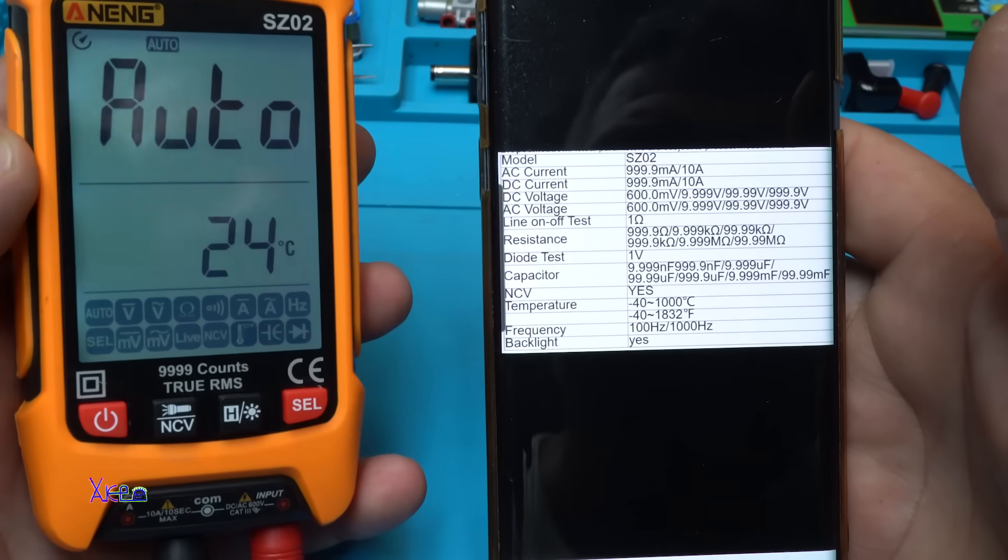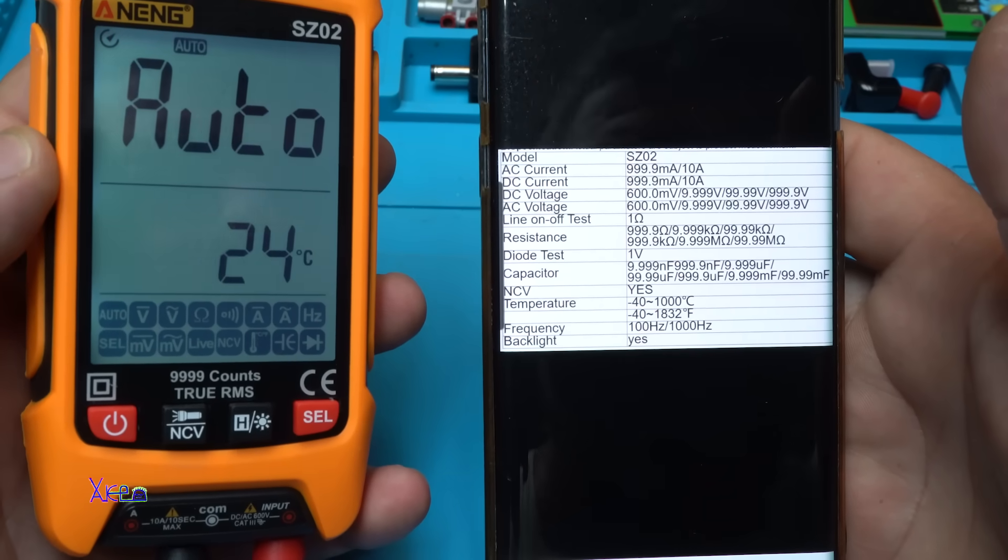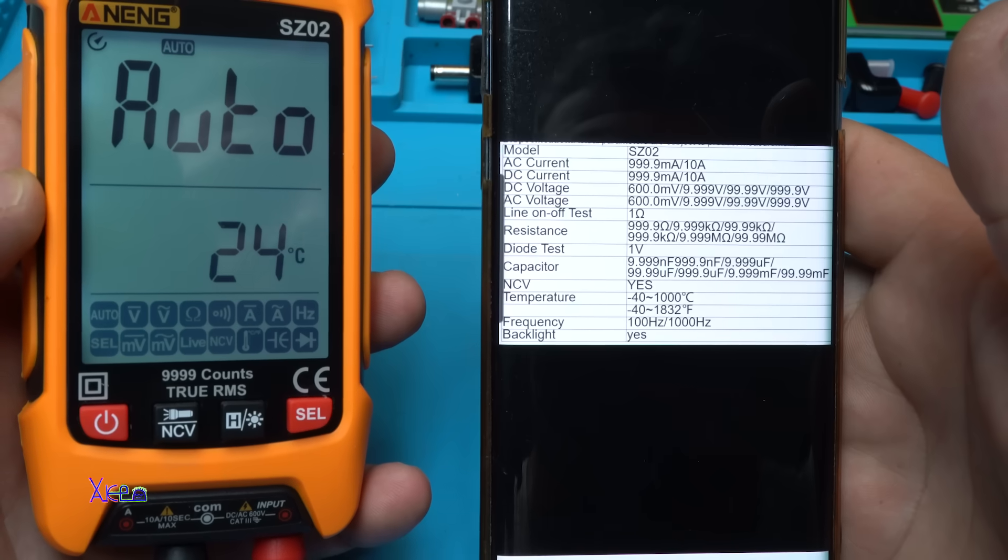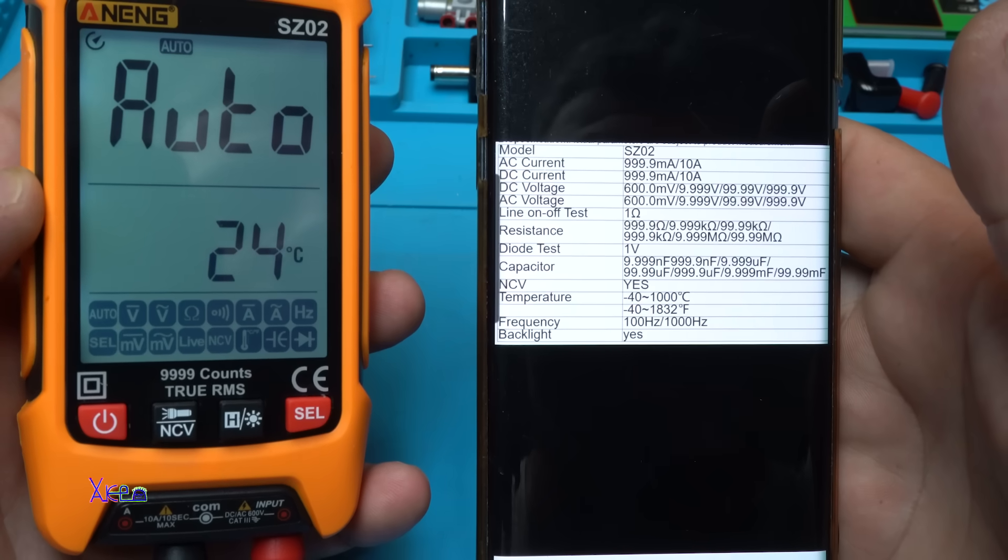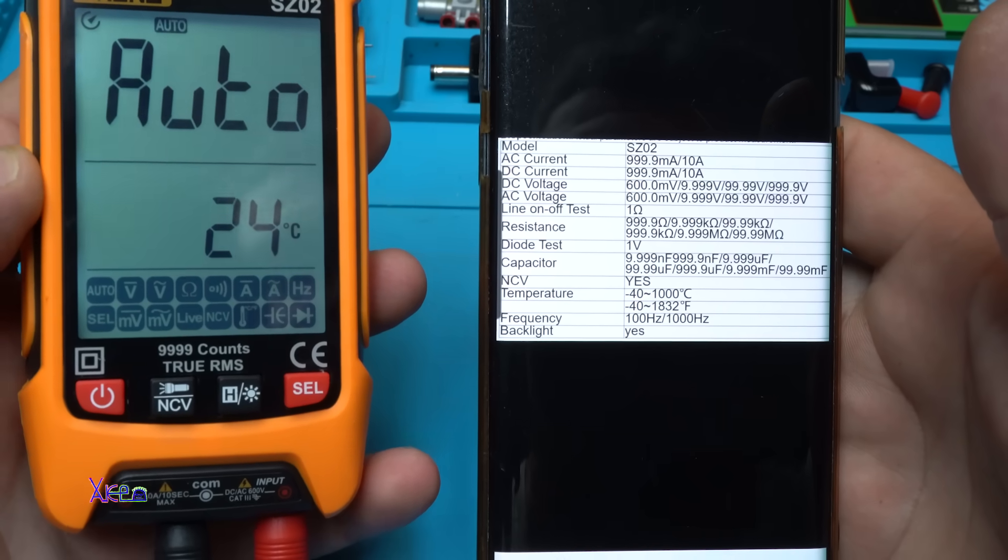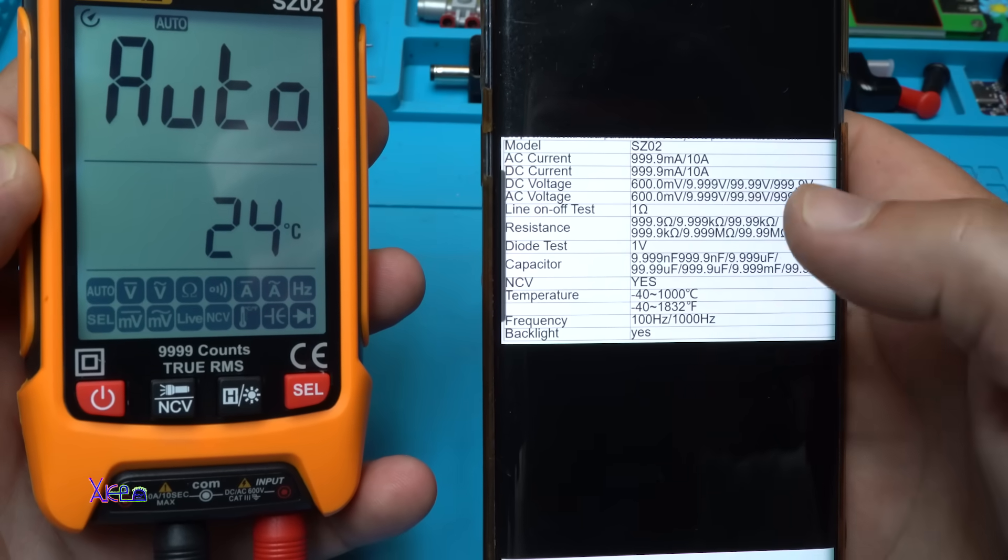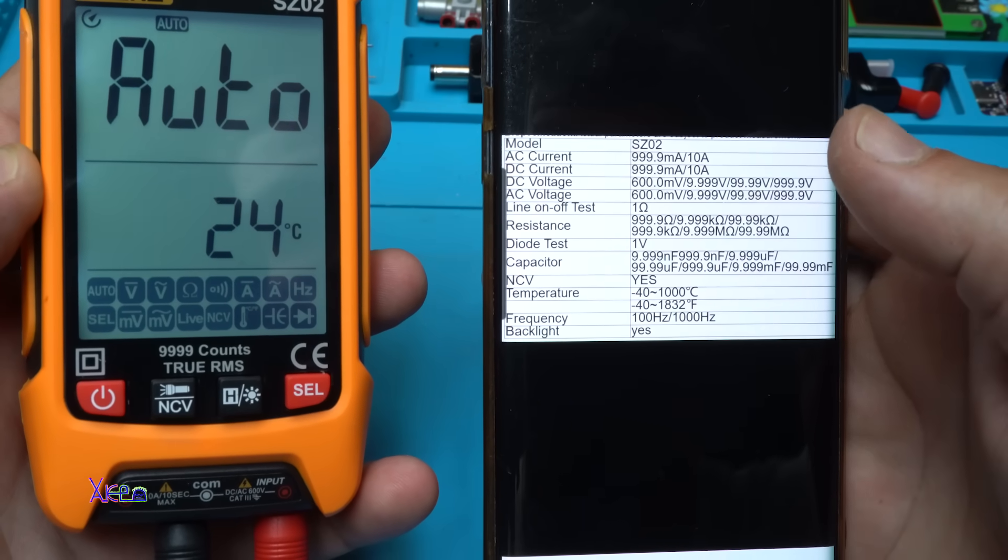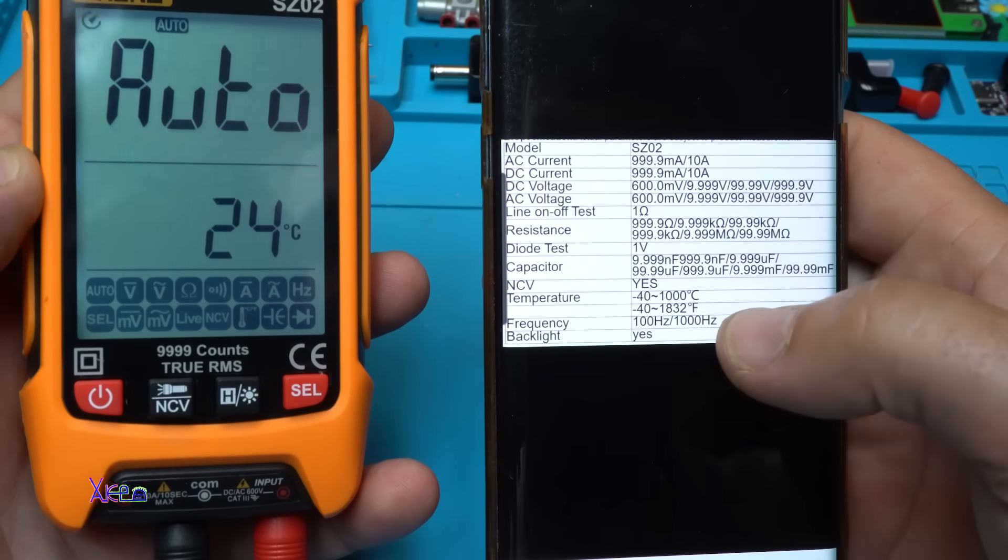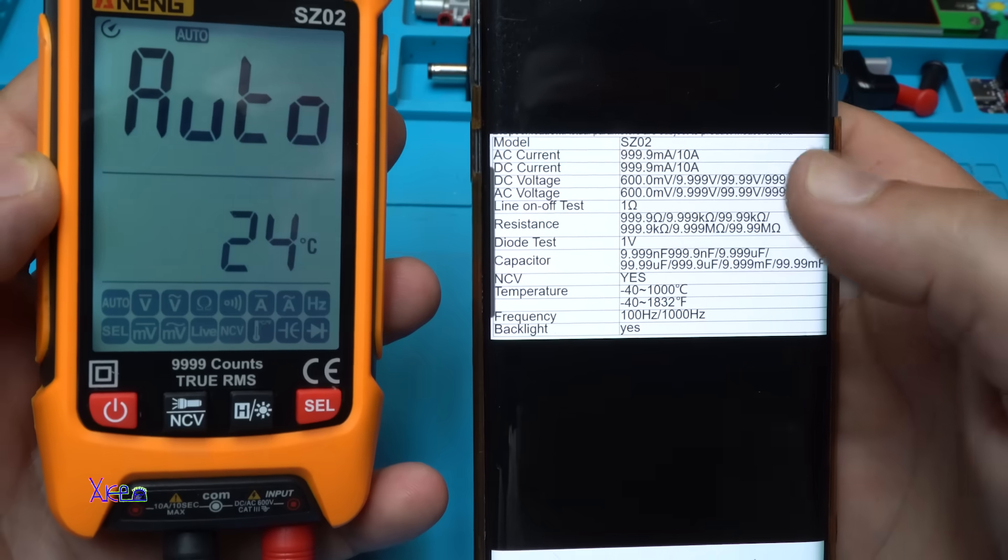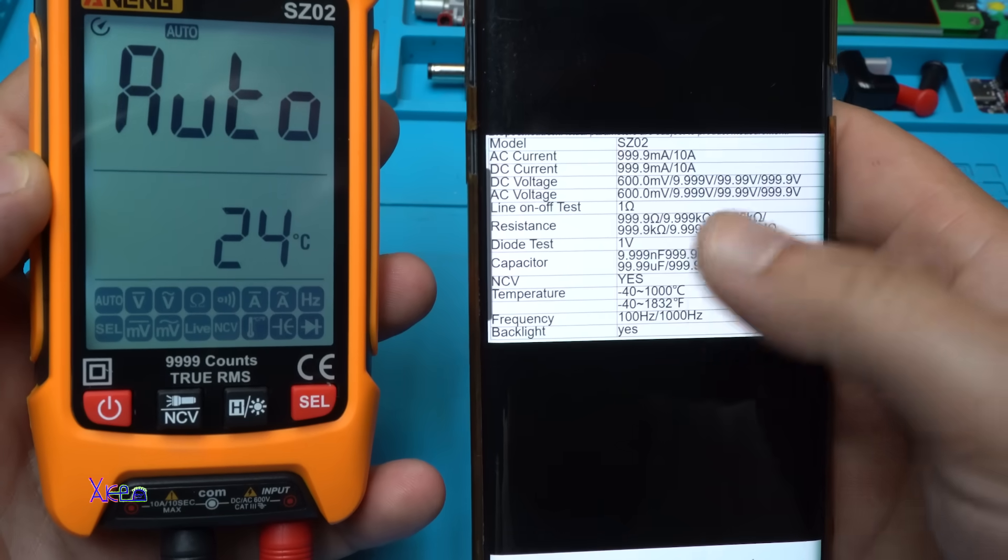Just to share what can measure this multimeter. You can see AC current, DC current, DC voltage, AC voltage, line off test, resistance, diode test, capacitor, non-contact voltage, temperature, frequency, and backlight. Frequency meaning when you measure AC voltage, it will show the frequency. Okay. You can pause the video and check these parameters.